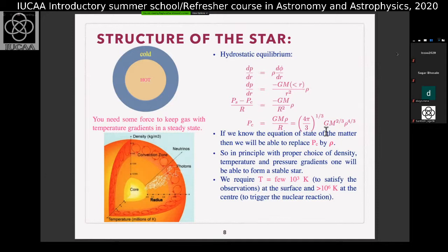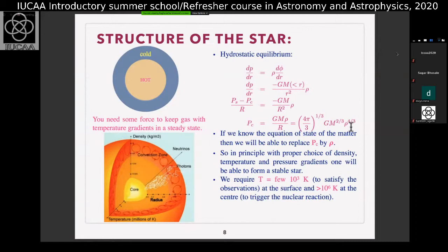We need pressure, density, and mass. If you see pressure and density together in the equation, you can make it interesting by replacing pressure with density using the equation of state: P ∝ ρ^γ. With proper choice of density, temperature, and pressure or density gradients, one will be able to form a stable star satisfying all these conditions. It is more complex than just hot inside and cold outside — at each point you must satisfy the hydrostatic equation.